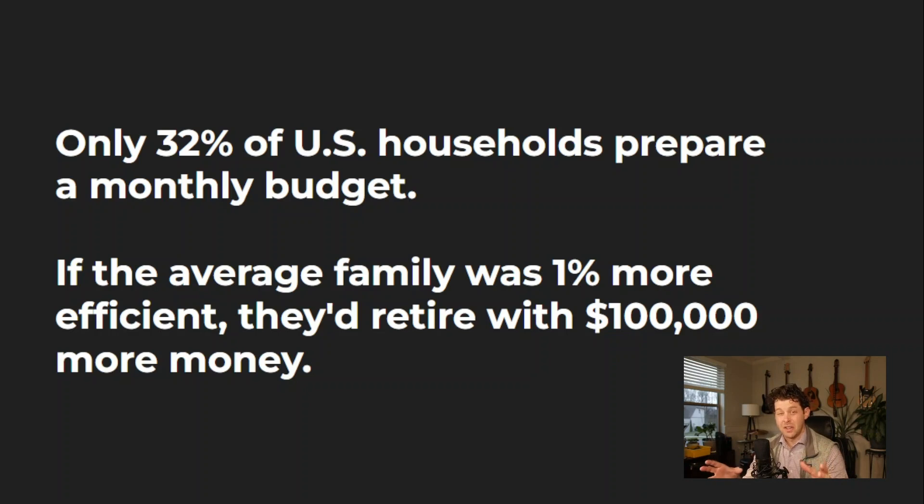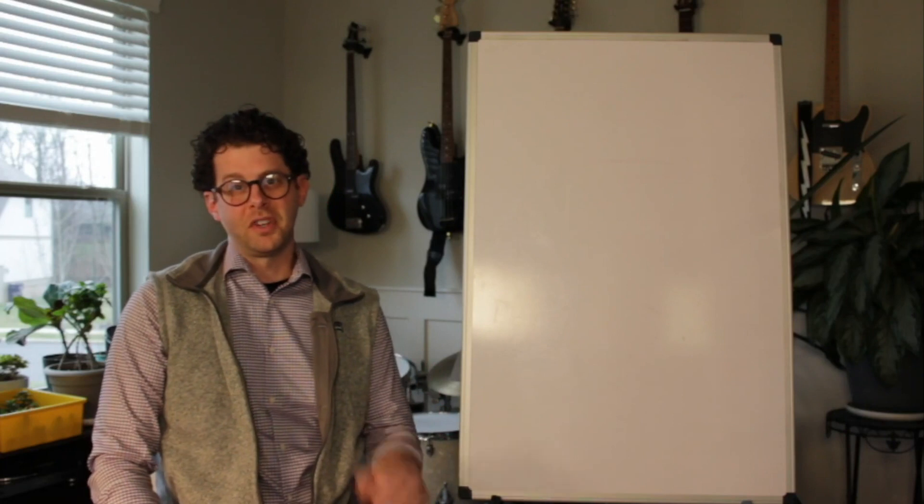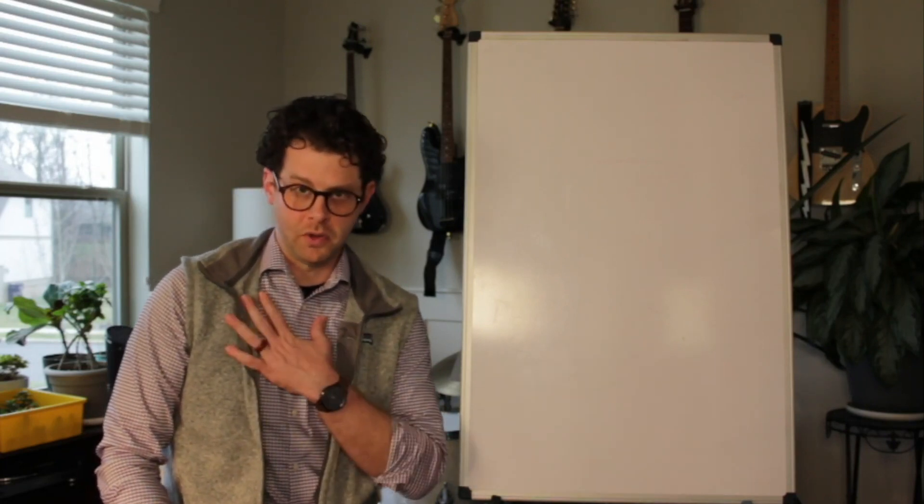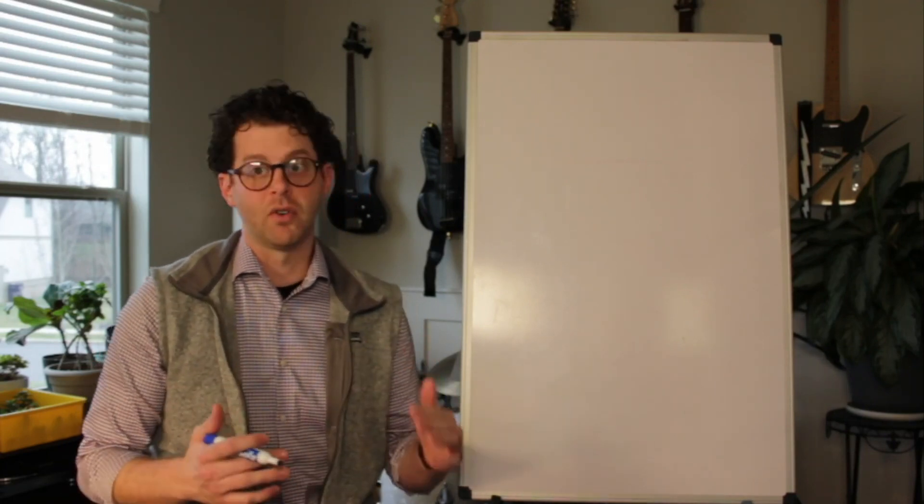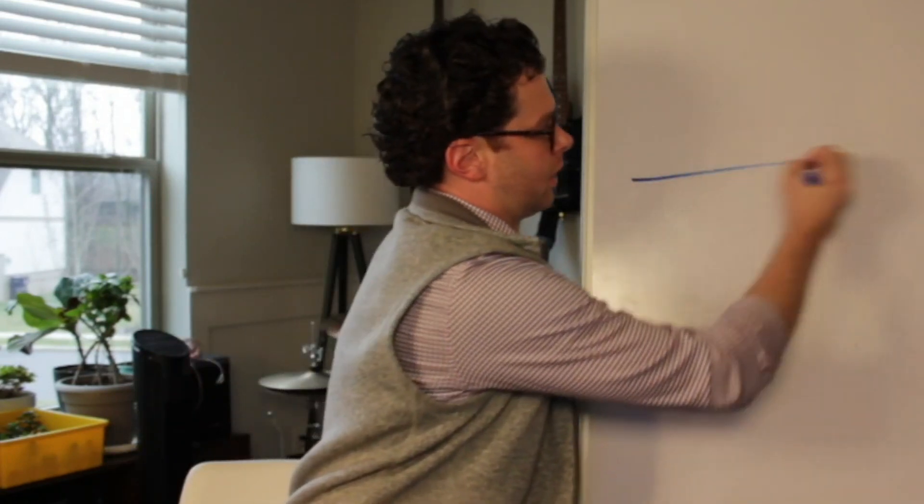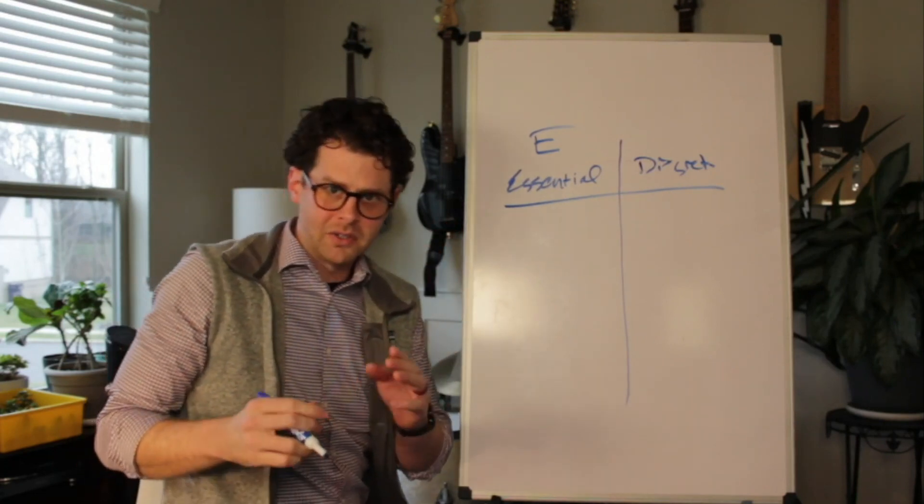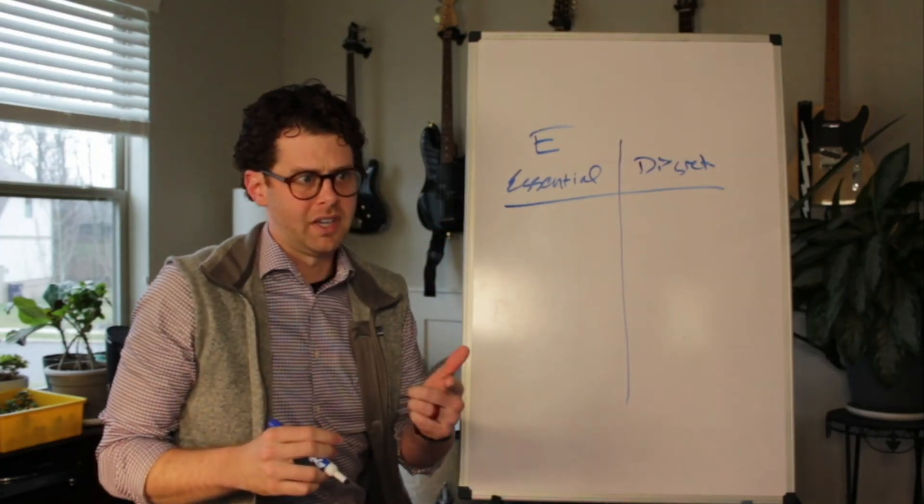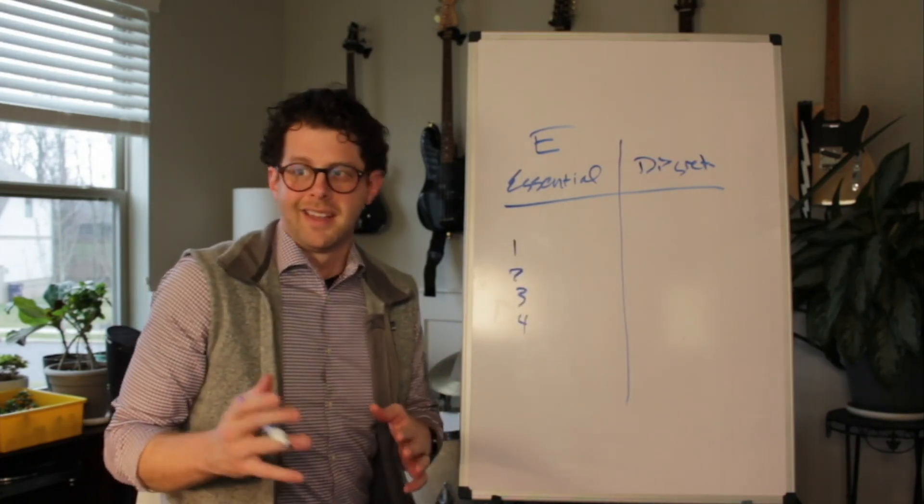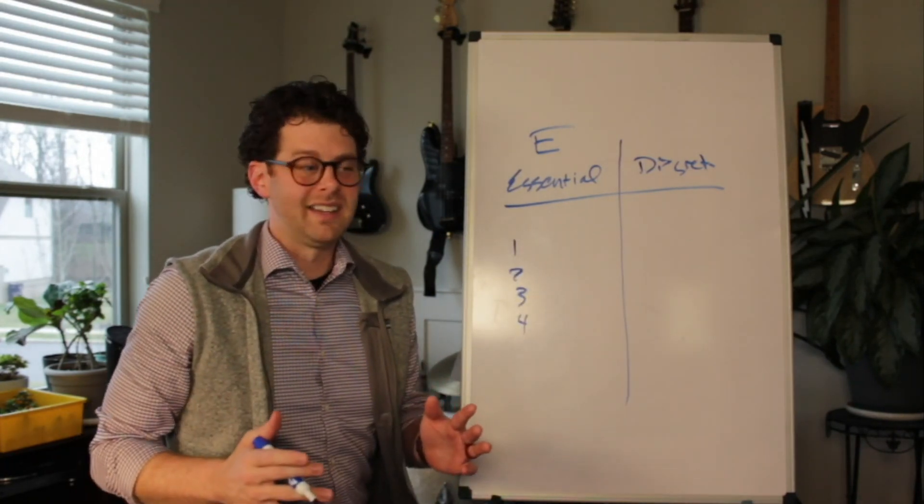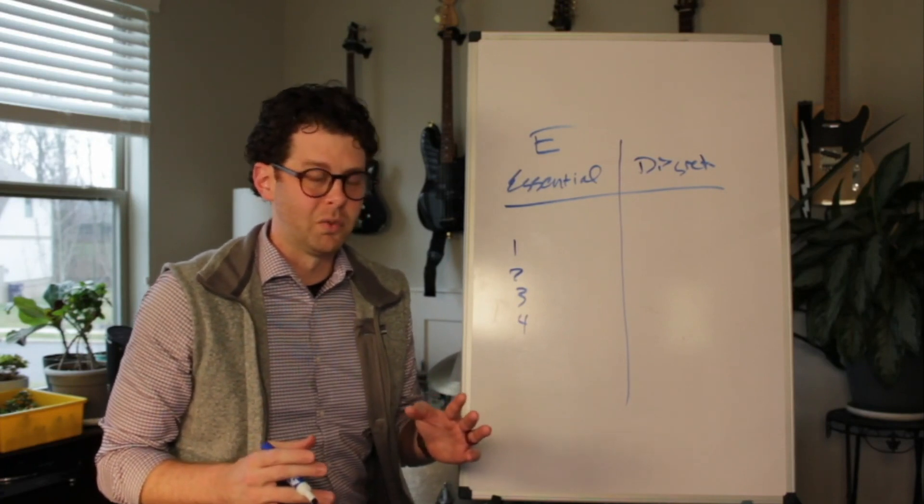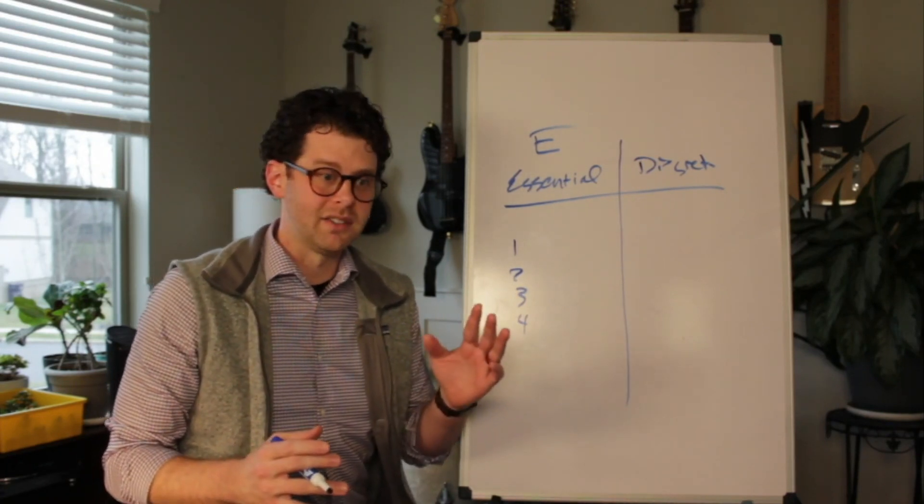Here are three examples of different budgets we've used historically. The first is what I'd call a bare bones option: two columns—essential and discretionary. That's your four walls: housing, transportation, clothing, and food. Discretionary is everything else. This is where you get into the gray area of what is discretionary food versus essential food.